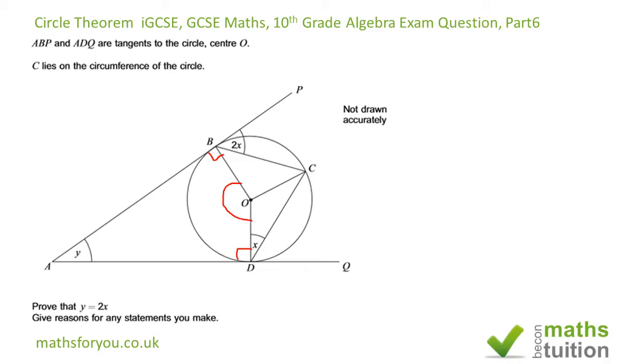That's the tangent there and that's the radius, so this angle must be 90 degrees. Similarly, this angle here must also be 90 degrees because that's the tangent and the circle. I can see two isosceles triangles now because that's the radius and therefore that's the radius—they're both equal.